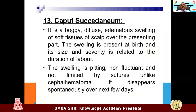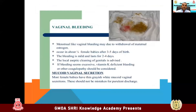Caput succedaneum is also due to the delivery process — a boggy, diffuse, edematous swelling of soft tissues of the scalp over the presenting part. The swelling is present at birth and its size and severity is related to the duration of labor. The swelling is pitting on pressure and not limited by sutures, unlike cephalohematoma. It disappears spontaneously over the next few days but can also be very painful — if so, give paracetamol 15 mg/kg three times a day.